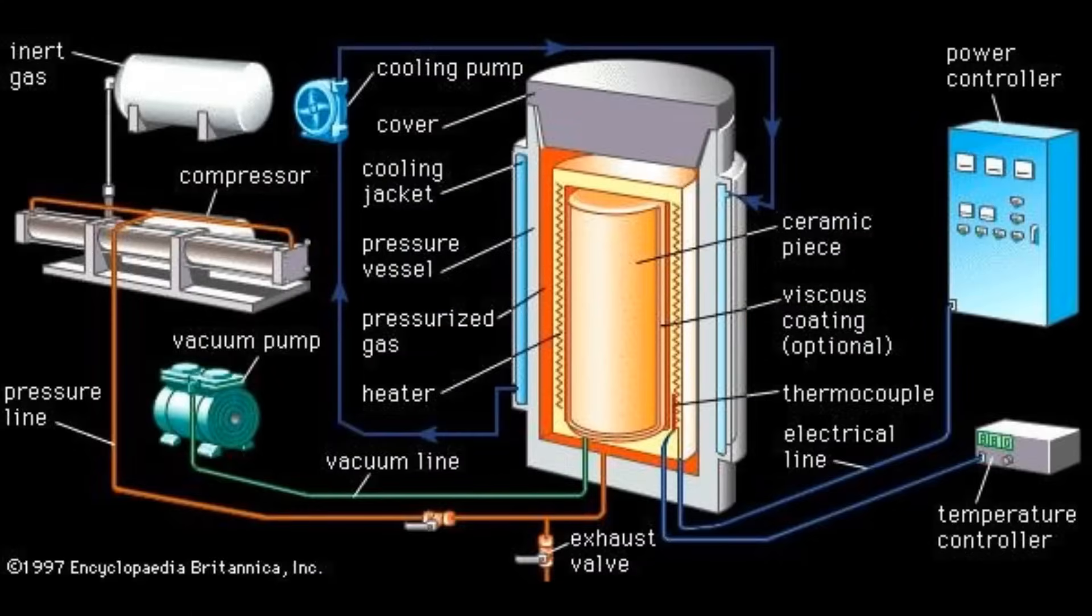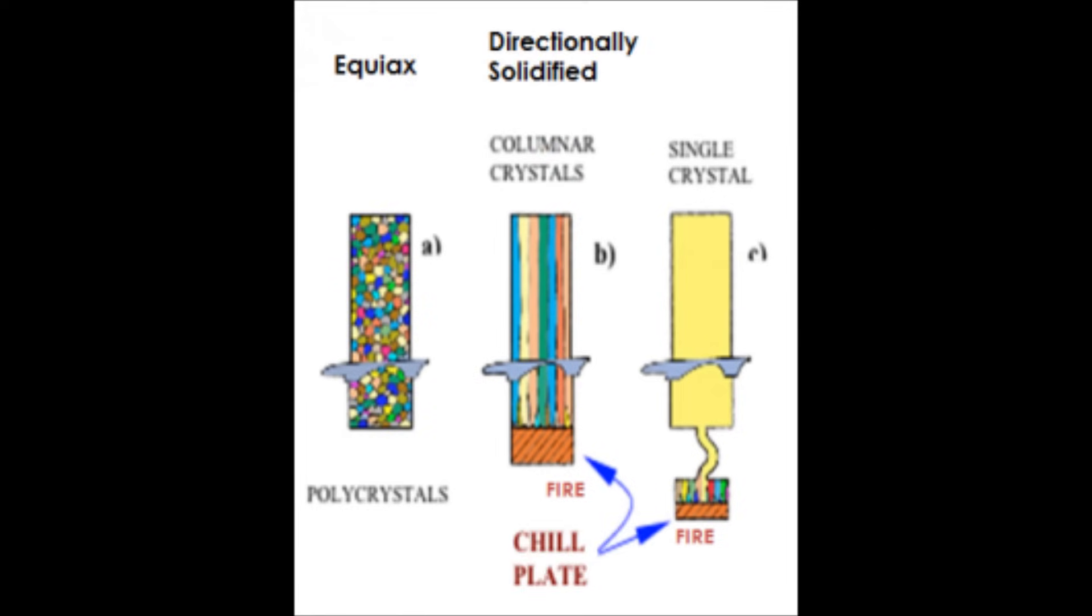HIP exposes the super alloy to elevated temperatures and high pressure. This process reduces porosity and increases the ductility and fatigue strength, just as the turbine blades need to be successful. However, the innovations didn't stop there.